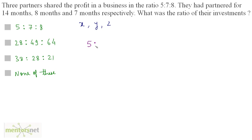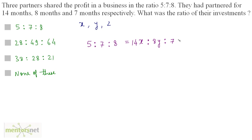We can write 5 is to 7 is to 8 equals the amount invested by the first person, which is x times its time period of 14 months, so 14x. Similarly, for the next person who invests y rupees for 8 months, we have 8y; and for z we have 7z.